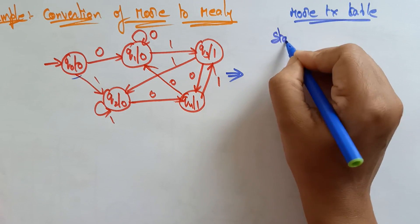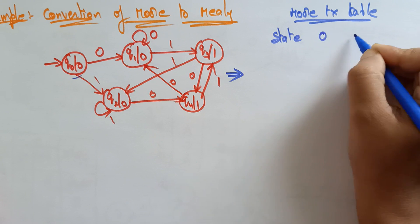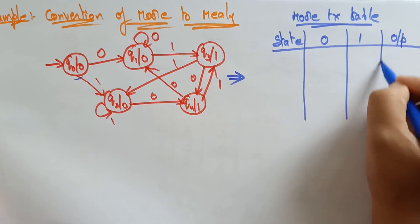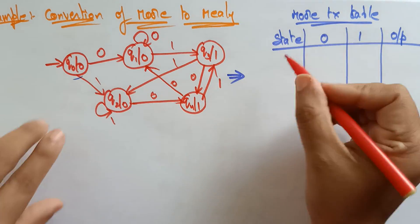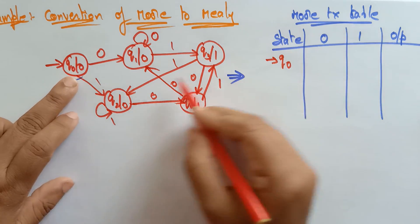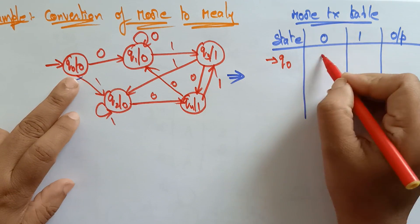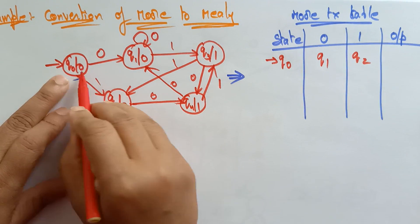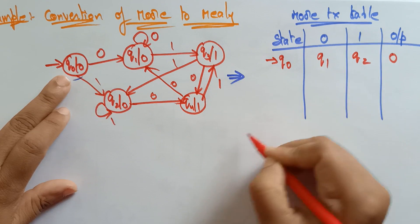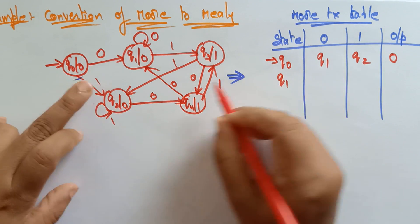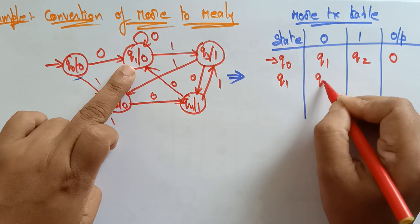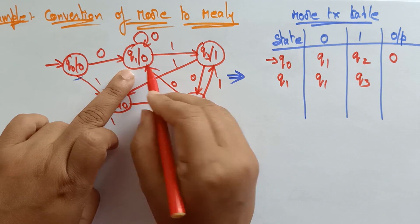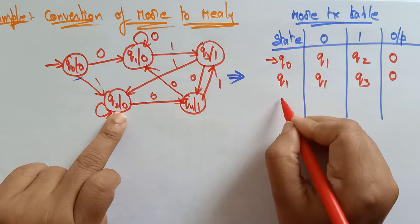The table has a state column, input zero, input one, and the output. The initial state is q0. Q0 on zero goes to q1, and q0 on one goes to q2, and the output of q0 is zero. Now coming to q1: q1 on zero goes to q1 itself, and q1 on one goes to q3, and the output of q1 is zero.